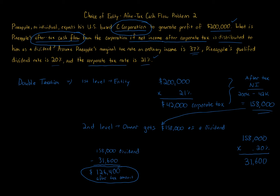Another way to calculate this: take $158,000 and multiply by 0.80 (80%), because we have to pay tax of 20% — the preferential rate. Multiplying by 80% gives you $126,400. This 20% is our preferential qualified dividend rate.